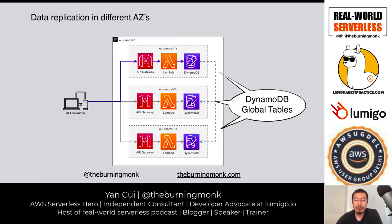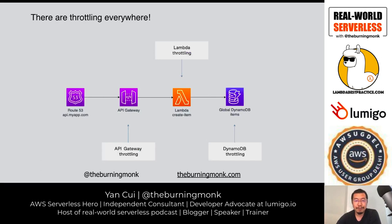For a multi-region setup, you can use DynamoDB Global Tables to make it easy to build a multi-region active application. However, every layer of a typical setup — API Gateway, Lambda, DynamoDB — has throttling. You can get throttled at the API Gateway level, at the Lambda level, and at DynamoDB as well. Different services also have different timeout limits to consider.